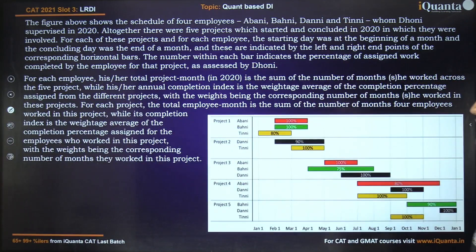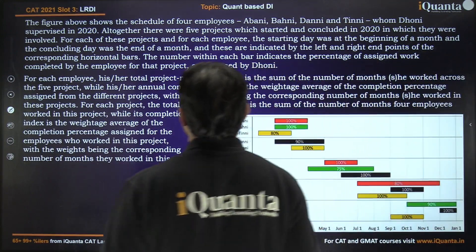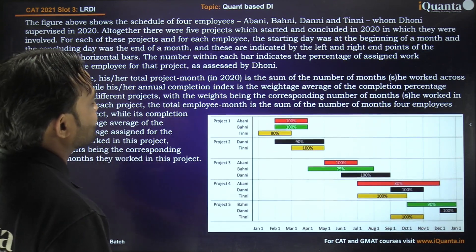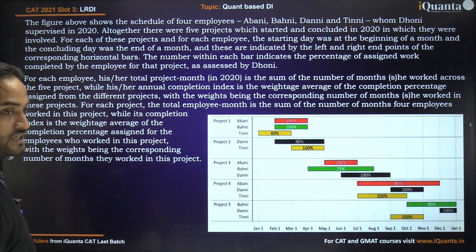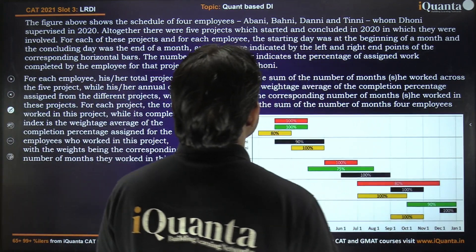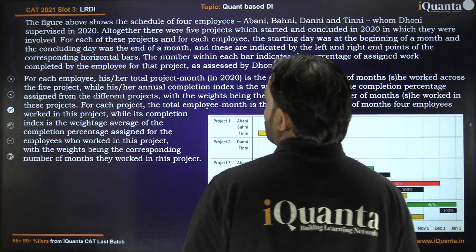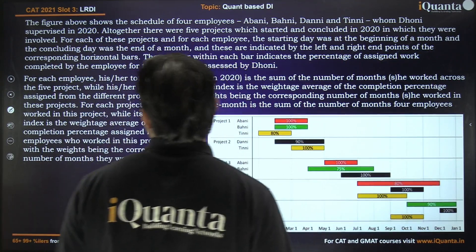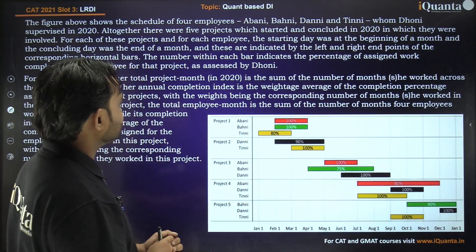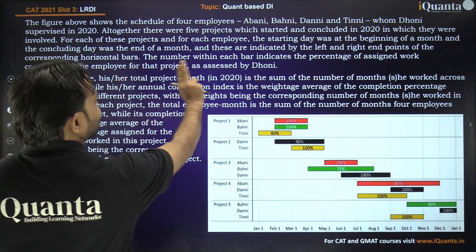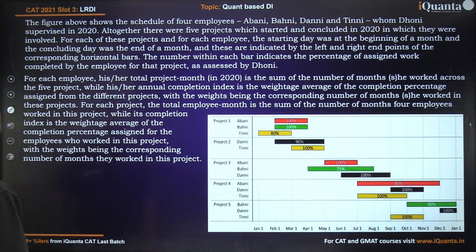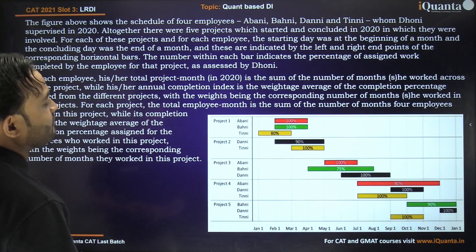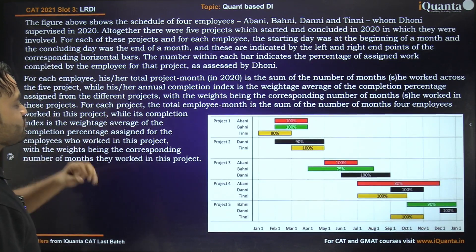This question is based on a horizontal bar graph. The figure shows the schedule of four employees — Abani, Bahani, Dhani, and Tinni — whom Dhoni supervised in 2020. Altogether, there were five projects which started and completed in 2020. For each project and each employee, the starting day was at the beginning of a month and the concluding day was at the end of a month. The starting and ending points are indicated by the left and right endpoints of the corresponding horizontal bars. The number within each bar indicates the percentage of assigned work completed by the employee for that project, as assessed by Dhoni.